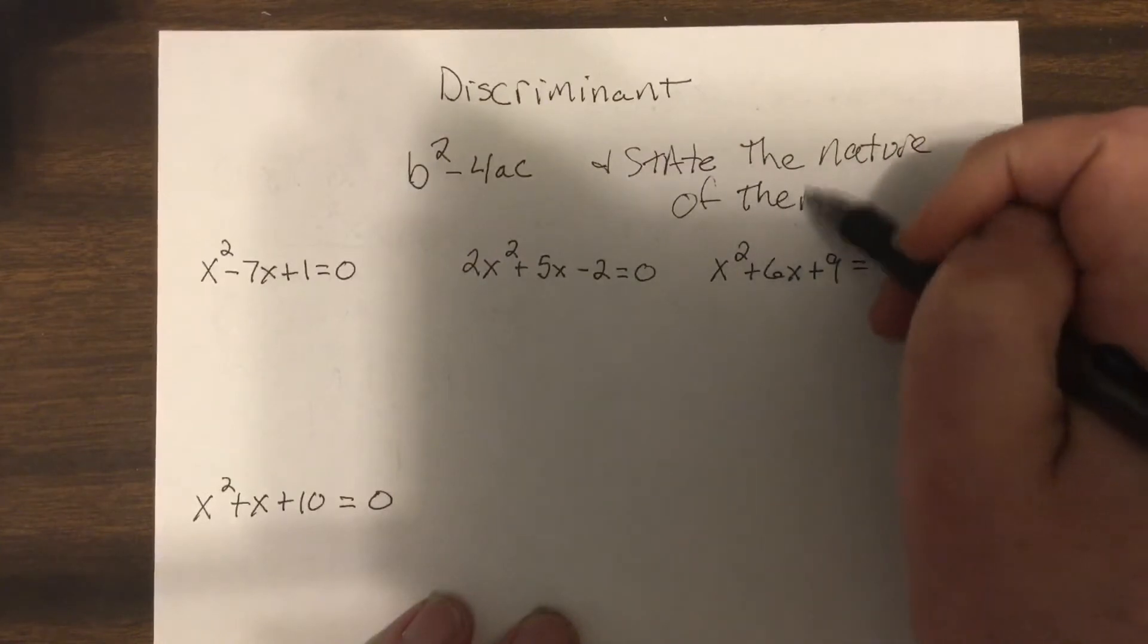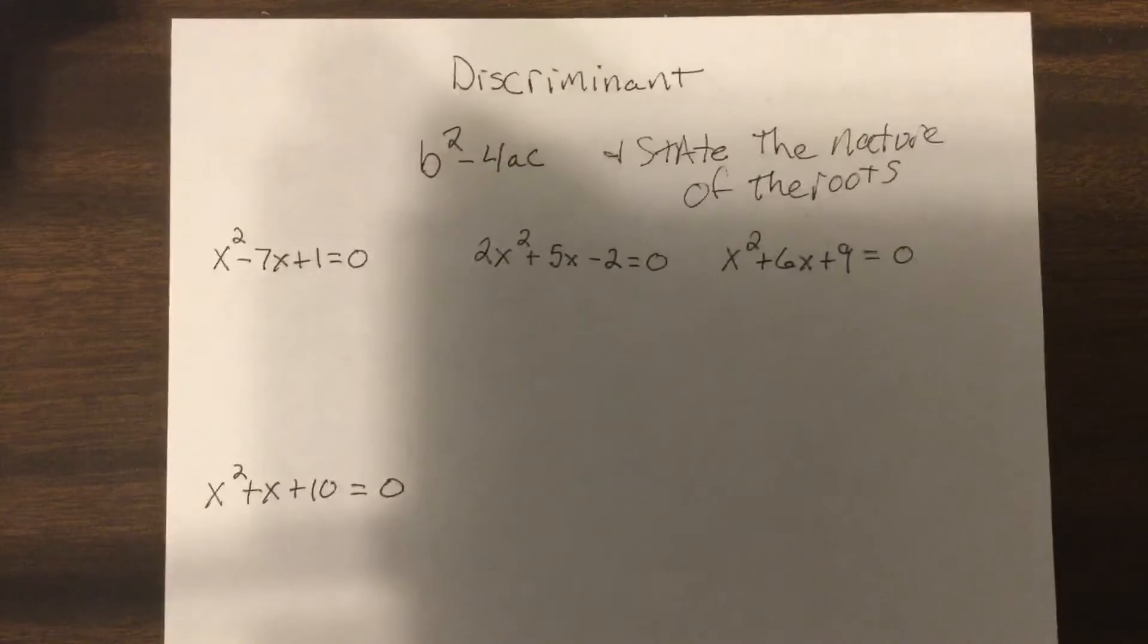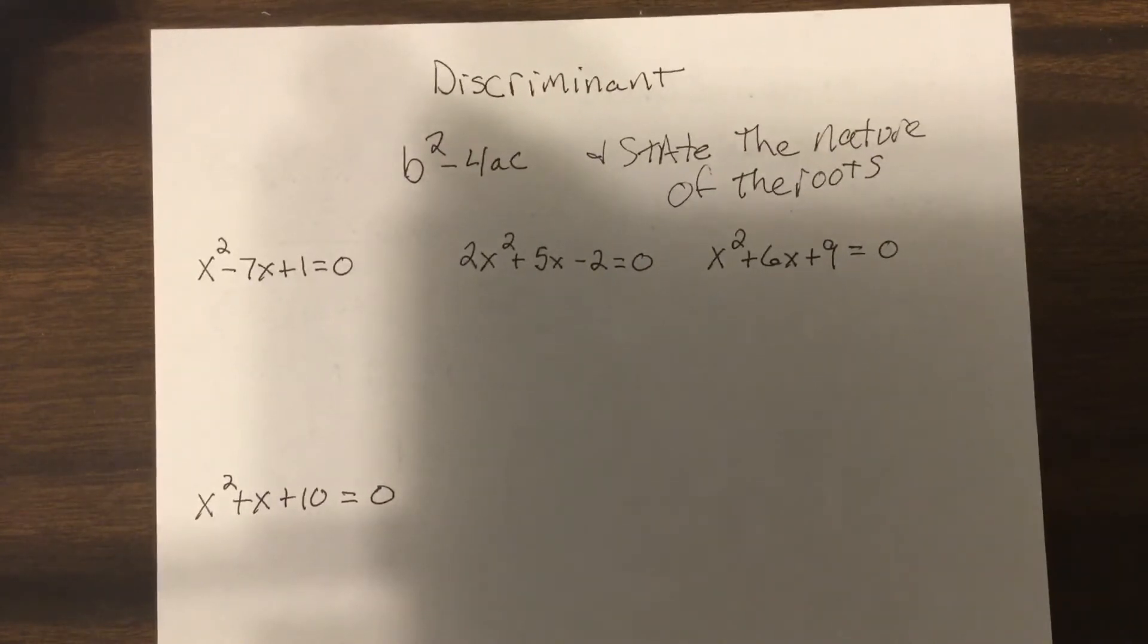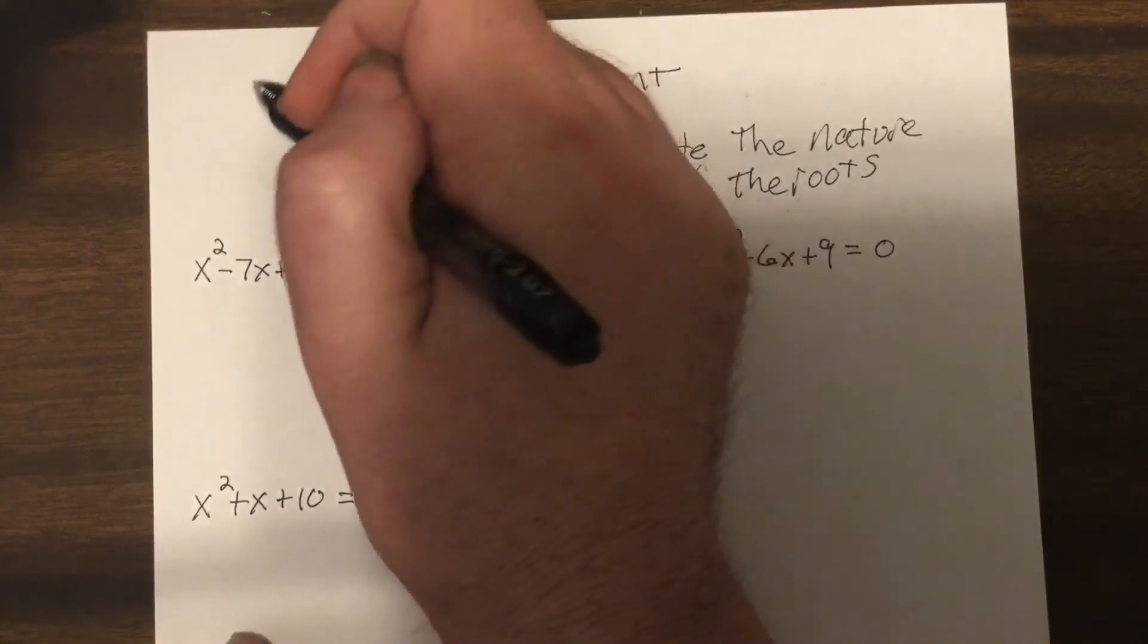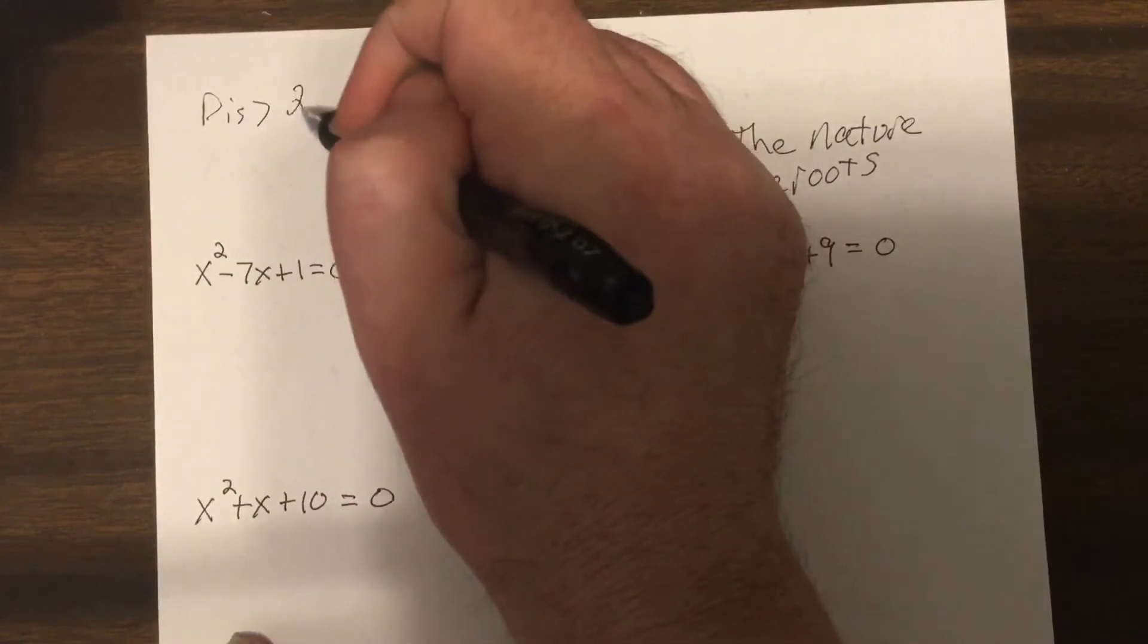Now different books break it up in different ways. I just broke it up in three ways, because we're not going to really spend that much time on this. So if it's greater than zero, the discriminant, then it's two real roots.